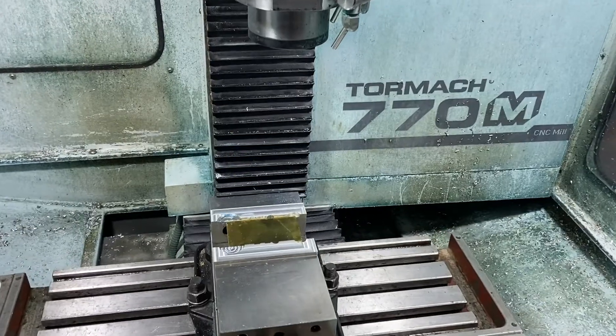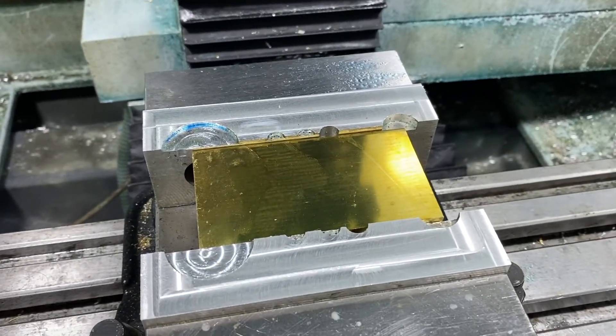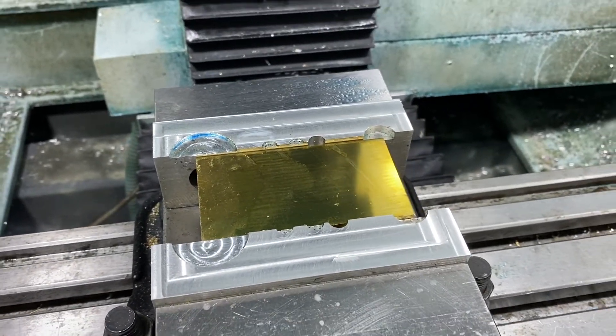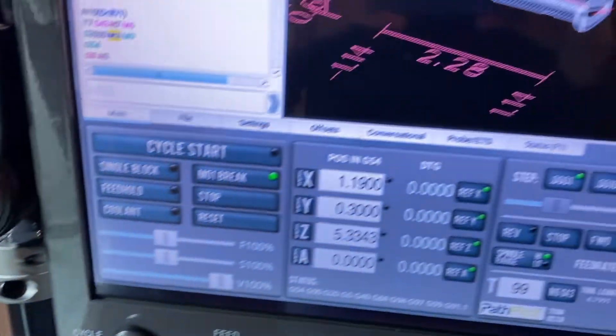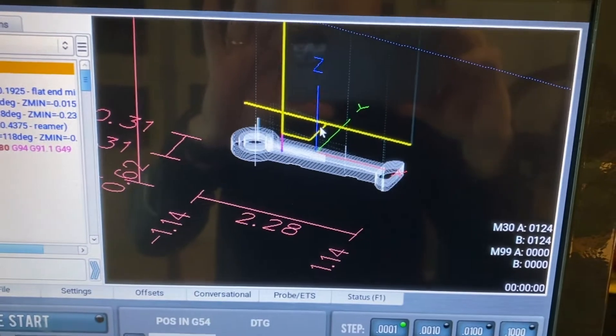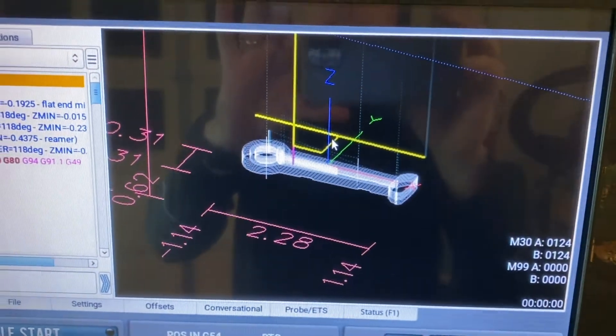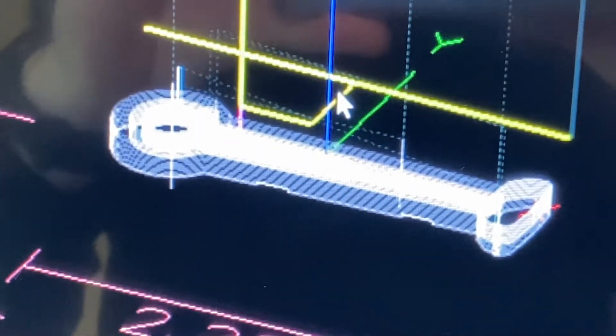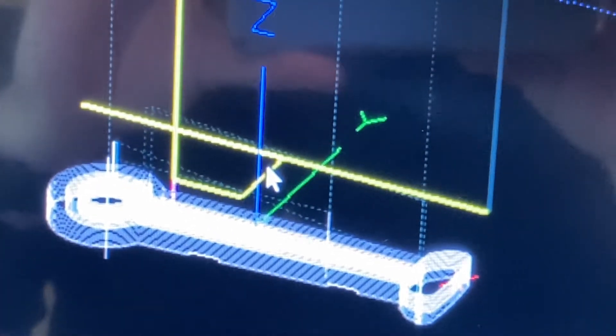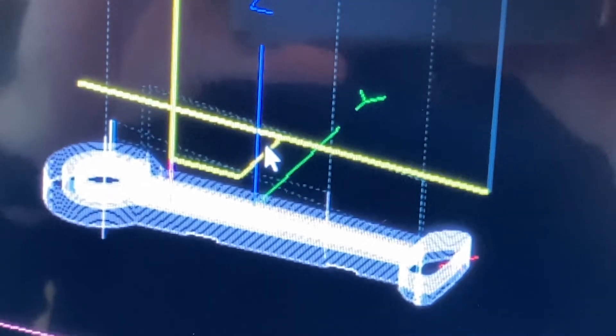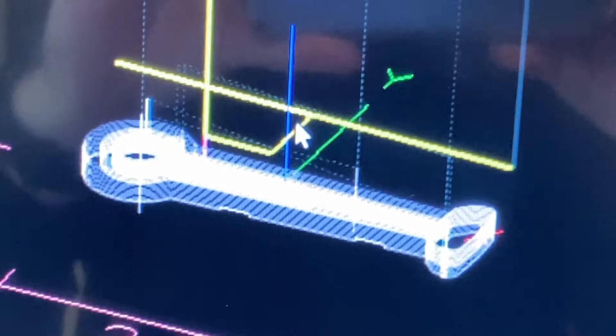I've got the material mounted in the Tormac, leveled it up with parallels, clamped nicely. We've got the G-code imported into the PathPilot software and you can see the operations. I made sure - it's a nice feature you can see where the tool tracks - so I made sure we got clearance on the vise before we start cutting into anything.